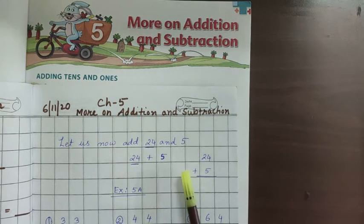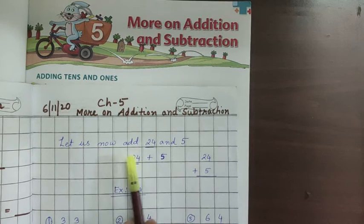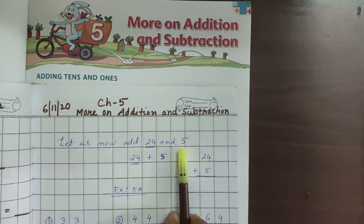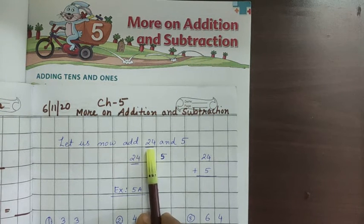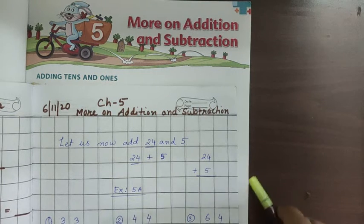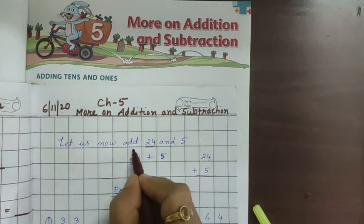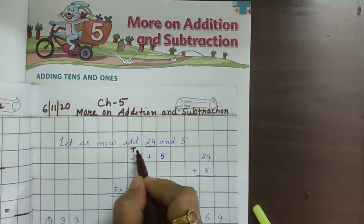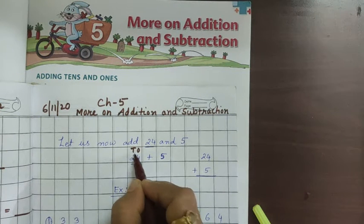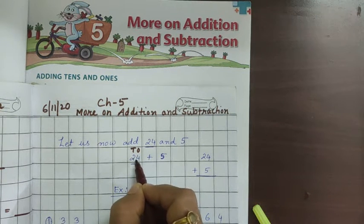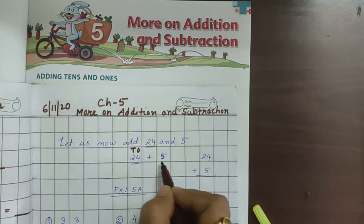Now let us start. Let us now add 24 and 5. 24 means if we will write 24, 2 is in tens and 4 is in ones. That means 2 tens and 4 ones, 20 plus 4 plus 5.